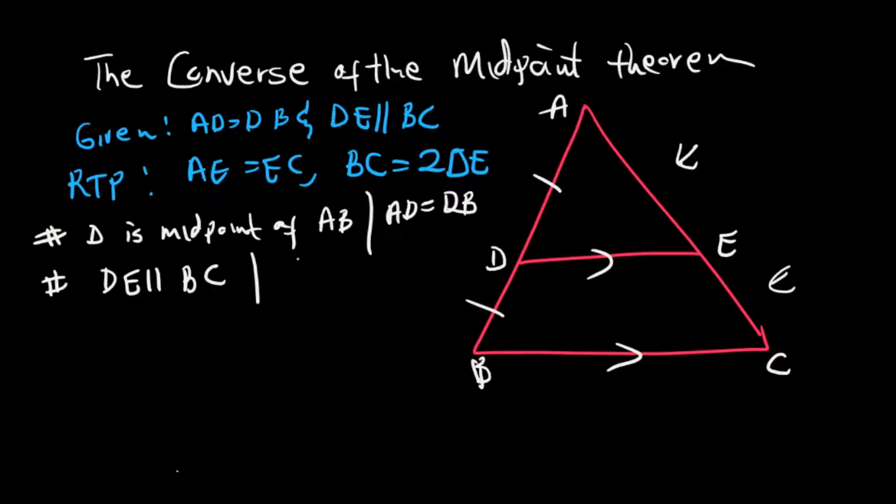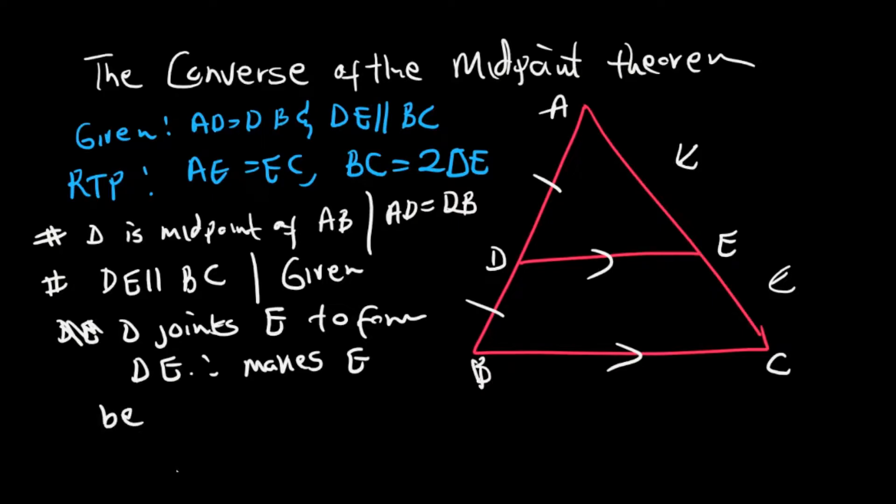Once you have a midpoint and a parallel line, the fact that D joins E to form DE, therefore this makes E be the midpoint of AC.